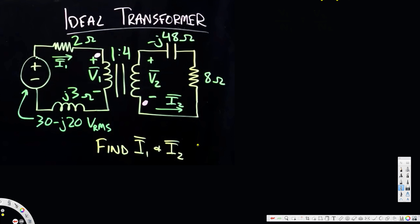In this video we are going to see an example of an ideal transformer. The question asks us to find the currents i1 and i2. We know this is an ideal transformer by looking at this sign — this equal-kind-of sign indicates an ideal transformer.